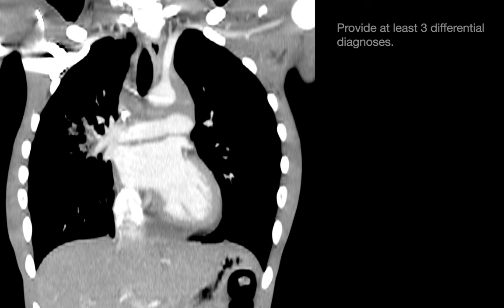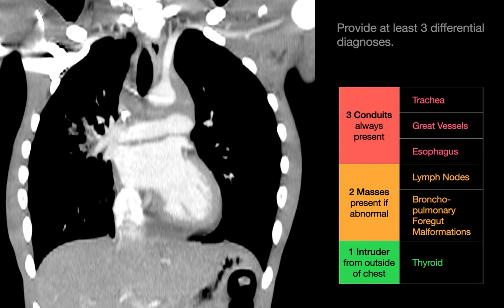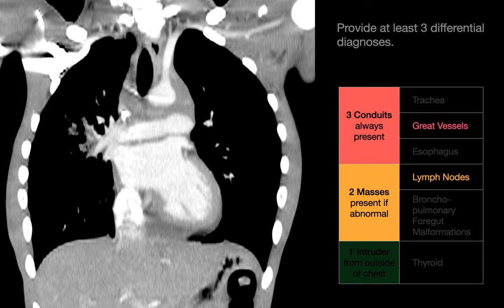Sources of a middle mediastinal mass can be recalled using our 3-2-1 rule as summarized on this table. Masses arising from the trachea or esophagus, bronchopulmonary foregut malformations, and thyroid masses usually don't exhibit such a confluent and infiltrating appearance. A confluent and infiltrating middle mediastinal mass like this one would most likely be a mediastinal hematoma arising from a bleeding blood vessel or lymphadenopathy.